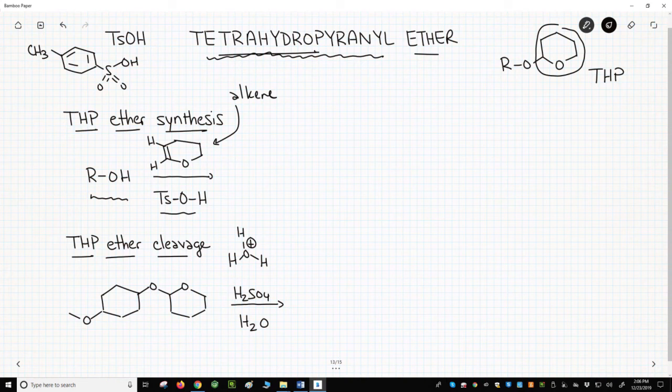Under acidic conditions, you know the first step of the reaction will be to protonate something. We are going to protonate the alkene.